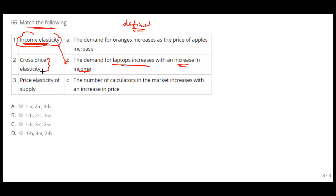Cross price elasticity is related to changes in quantity when the price of any other goods is increasing or decreasing. The demand for oranges increases as the price of apples increases. So this is cross price elasticity, and then we have price elasticity of supply.